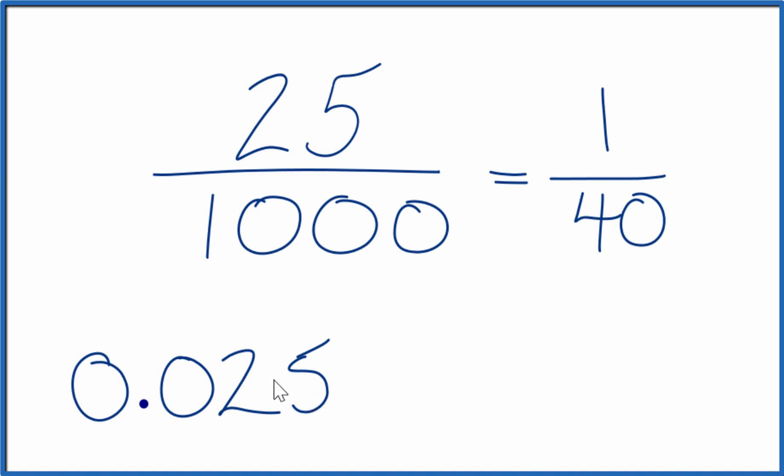And then if we wanted to get a ratio finally, we could just say 1 to 40. That's in simplest terms, so it's probably better just to say 1 to 40 is our ratio there.